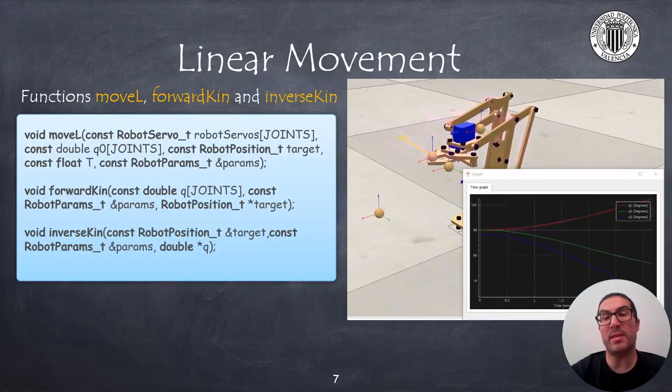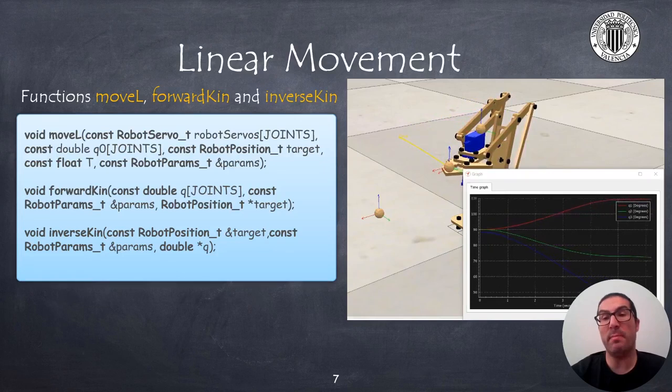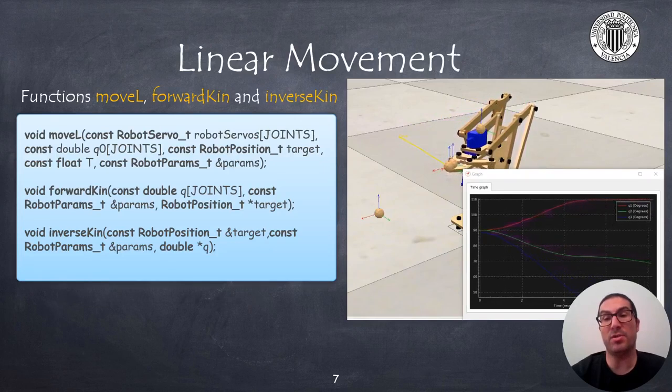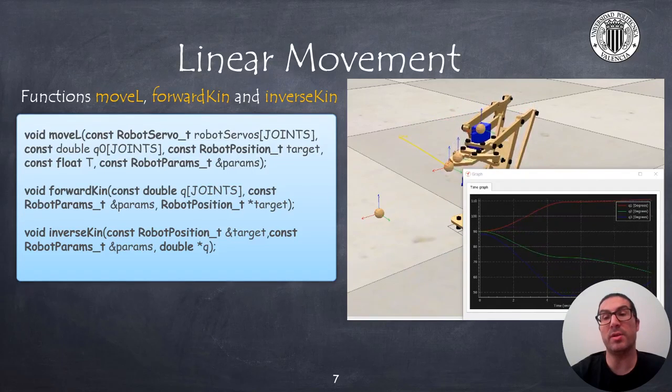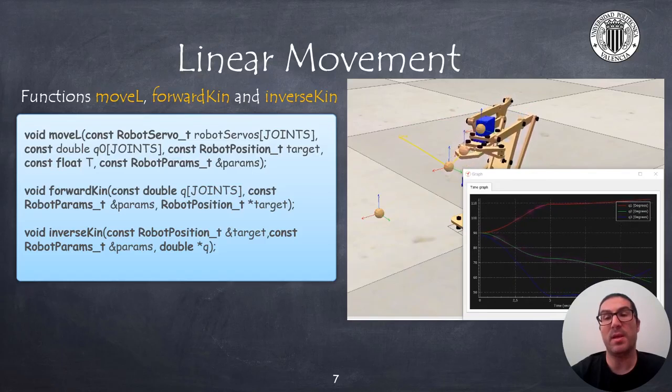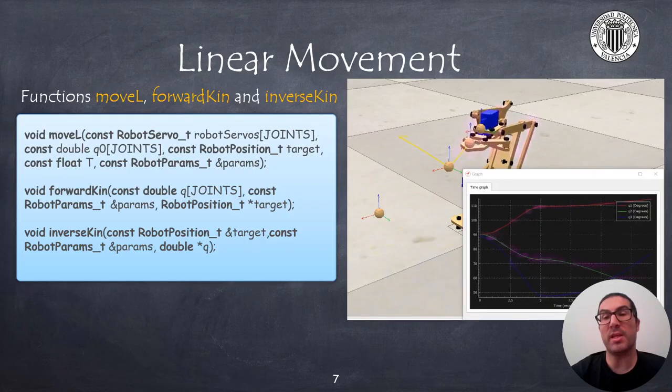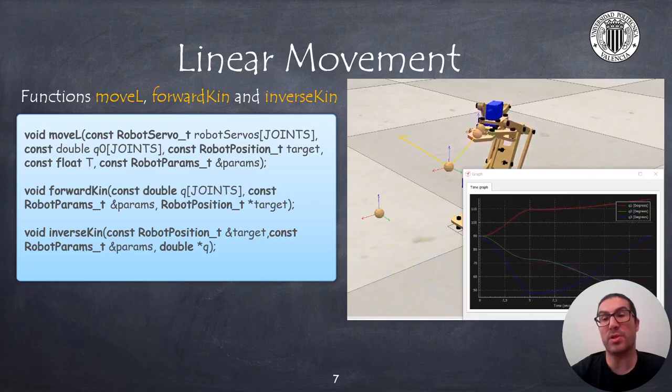To implement a linear movement in the Cartesian space, I propose to implement the moveL function, equivalent to the instruction under the same name in Rabbit. The video on the right shows an example of how it should work this instruction.